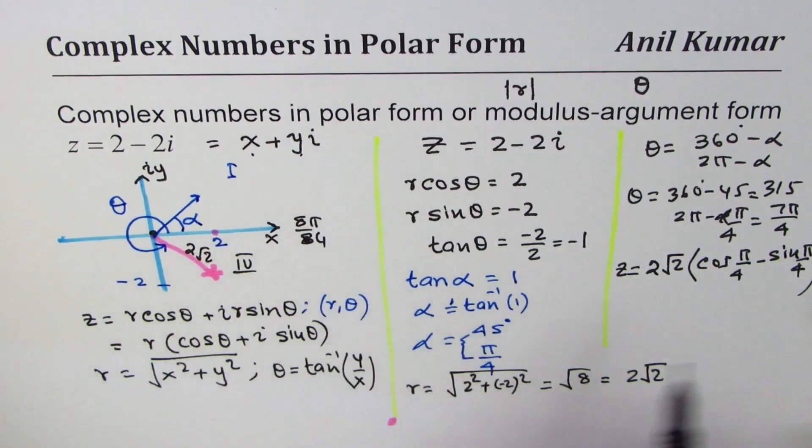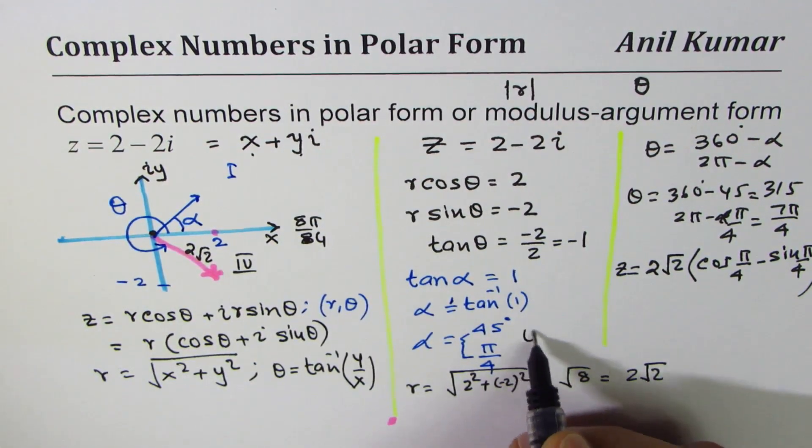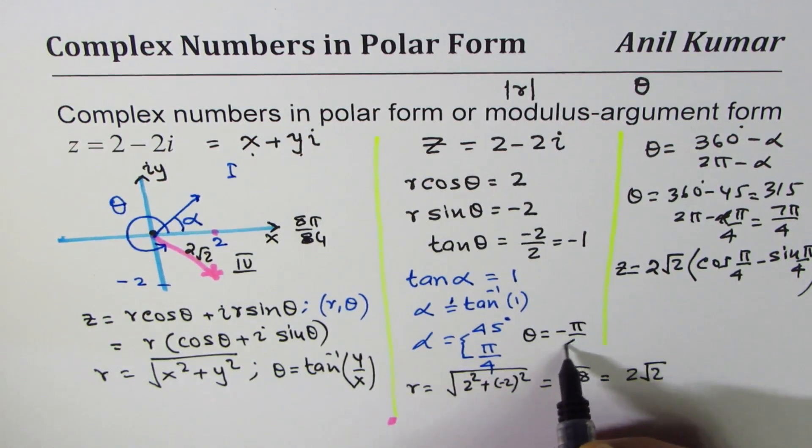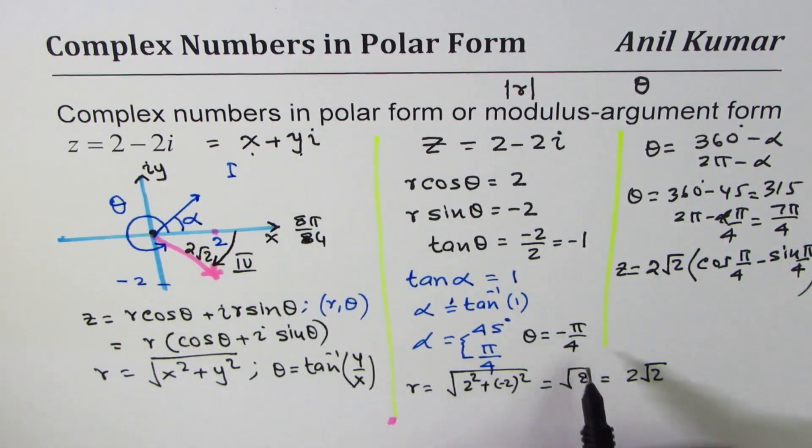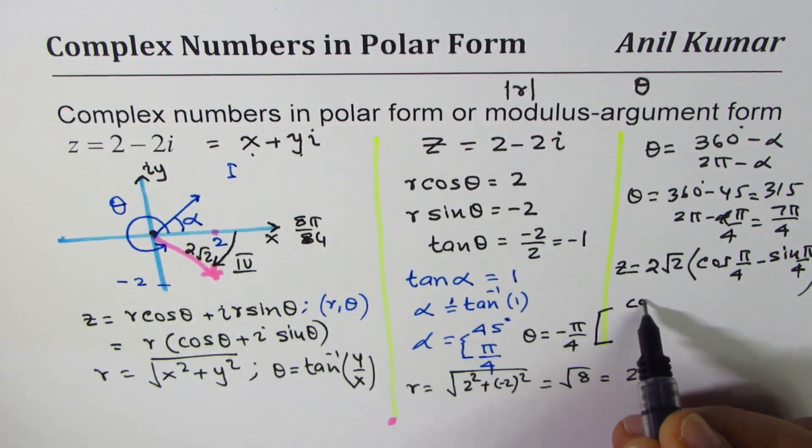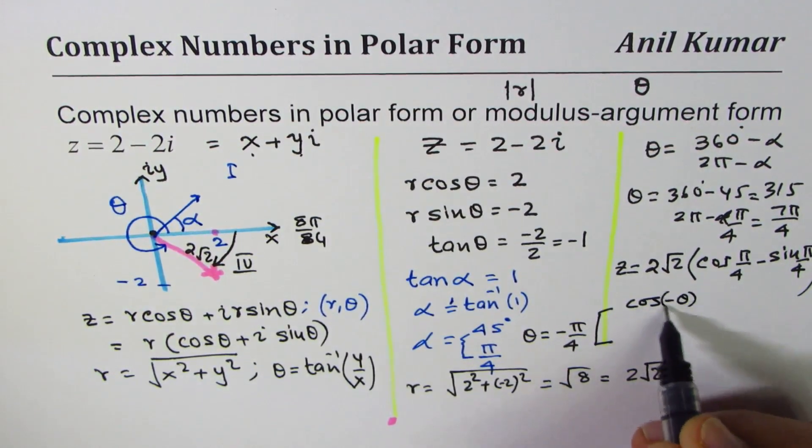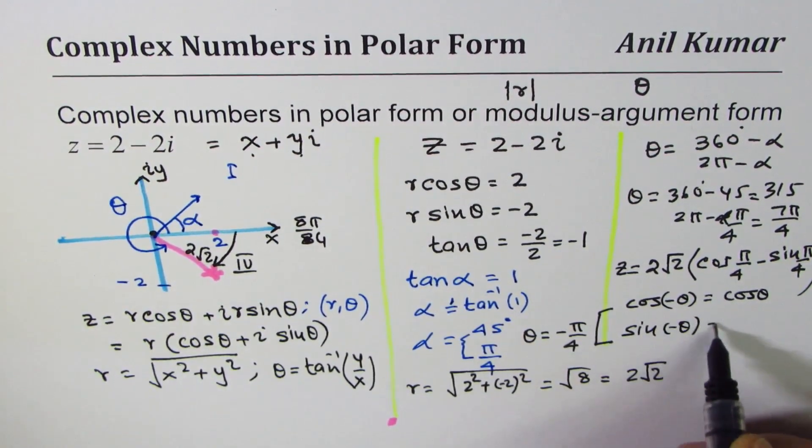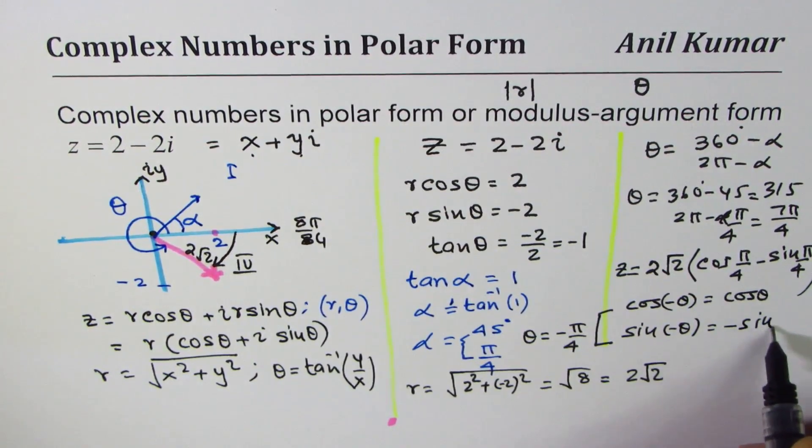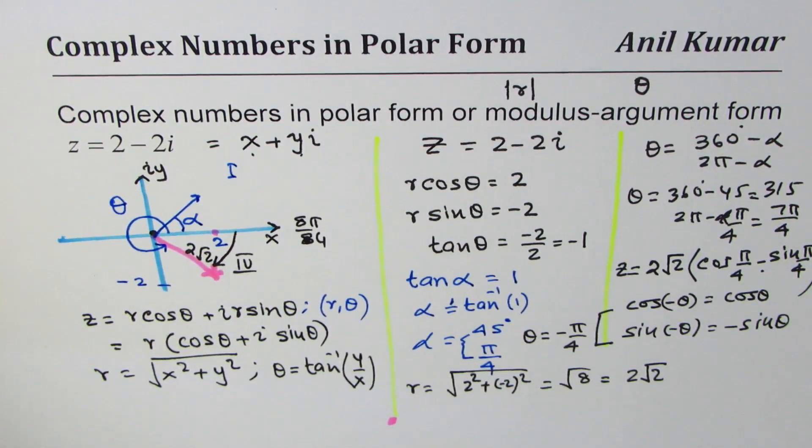And now what you need to understand more here is cos of minus theta is cos theta, but sin of minus theta is minus sin theta and that is why I got this minus unit. So there are a few things which you still may need to work on, may for some it may be straightforward.